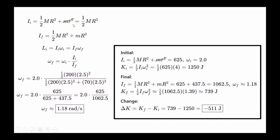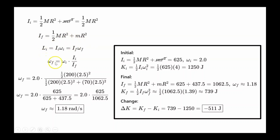When the man is standing at the center, his radius from the origin is zero, so the initial moment of inertia is just the moment of inertia of the merry-go-round. The final moment of inertia is the moment of inertia of the merry-go-round plus the moment of inertia of the man standing on the far edge. Conservation of angular momentum gives: I-initial times omega-initial equals I-final times omega-final. Rearranging, omega-final equals omega-initial times I-initial divided by I-final.